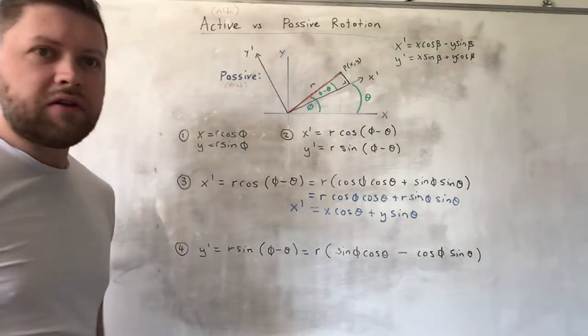If we look back here, we can replace r cosine phi with x. So that's x cosine theta plus we can replace r sine phi with y. So that is our expression for x-dash.